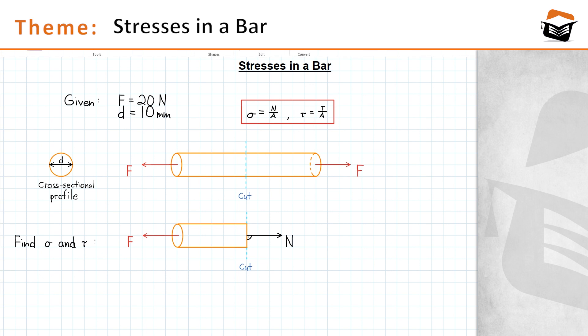So at this stage we can establish that the shear stress Tau is equal to zero Newton, that's the tangential force which is non-existent in our case because the cut is vertical, divided by the area, and that is equal to zero.